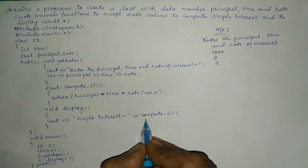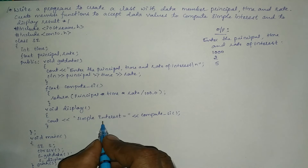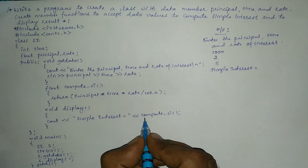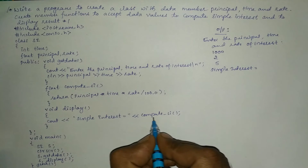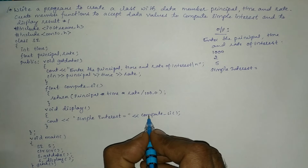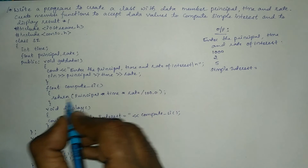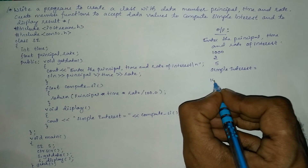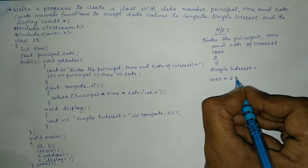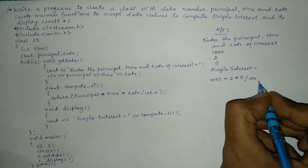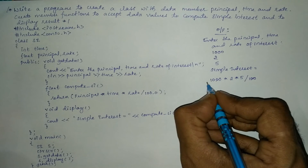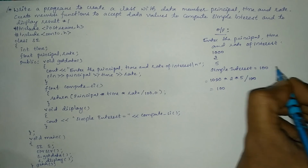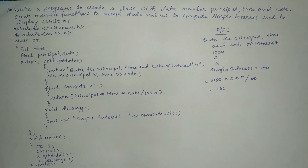After executing the get_data statement, control comes back to main and then calls y.display. Control jumps to the display function, which prints 'Simple interest is equal to' and then encounters the compute_si function call. The compiler jumps to compute_si, which returns principal * time * rate / 100 — that is 1000 * 2 * 5 / 100. The two zeros cancel, giving 10 * 10 = 100. So simple interest equal to 100 will be displayed.